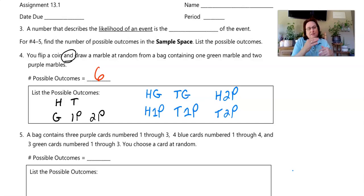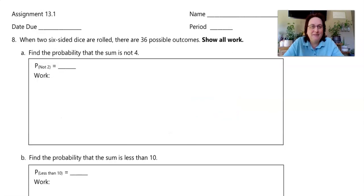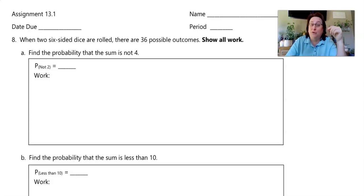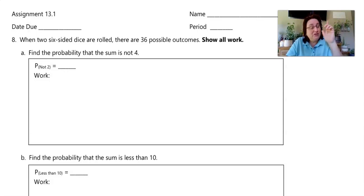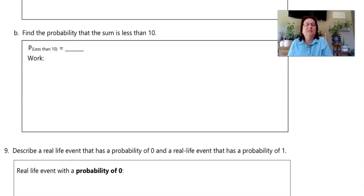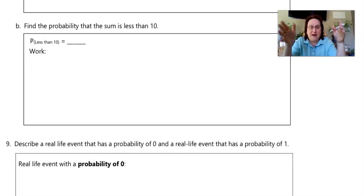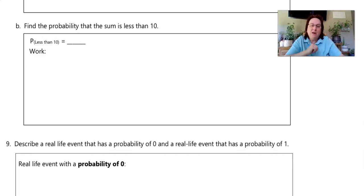Now let's shift gears and look at number eight B together. Notice it says: when two six-sided dice are rolled, there are 36 possible outcomes — you guys did this in your experiments. We're going to look at eight B, which says: find the probability that the sum is less than 10. Let's go to our formula charts and pull up the dice probability table.